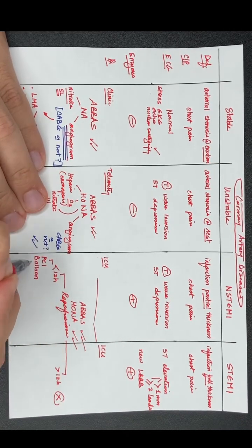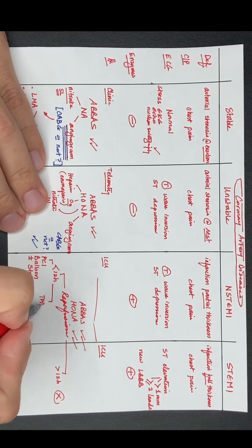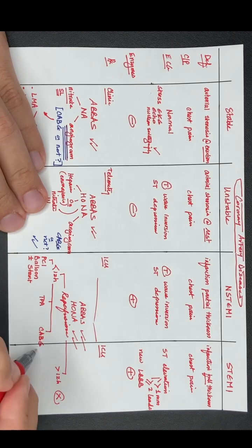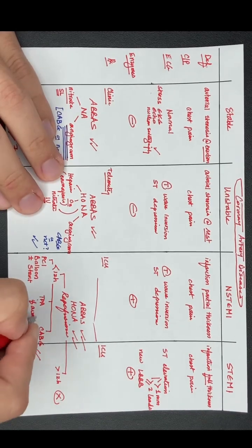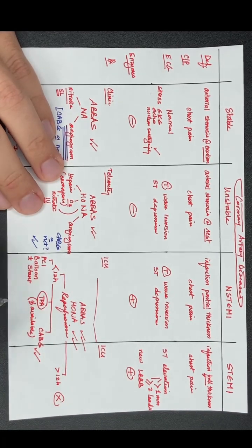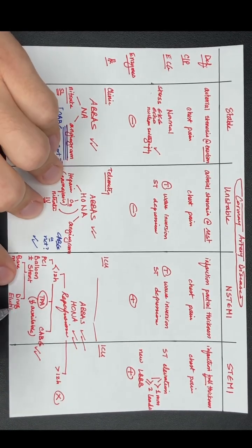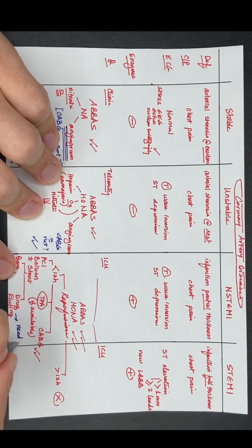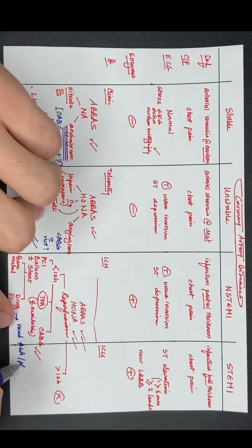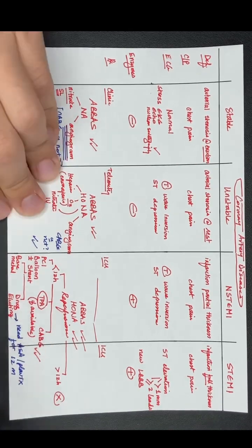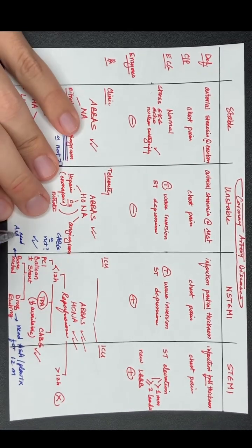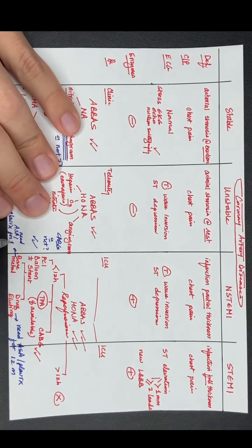For non-STEMI and STEMI, you both treat it in the ICU. Reperfuse the patient in less than 12 hours with tPA, balloon dilation, or stent. Remember, if it's a right ventricular MI, avoid beta-blocker and nitro and give fluids.